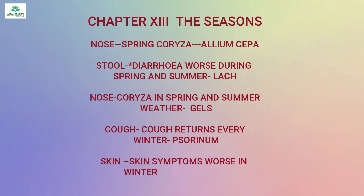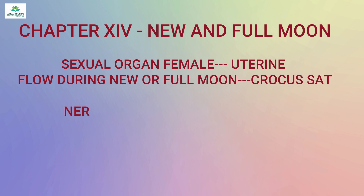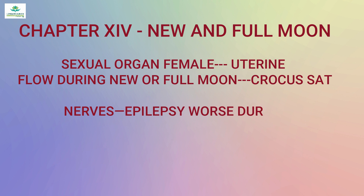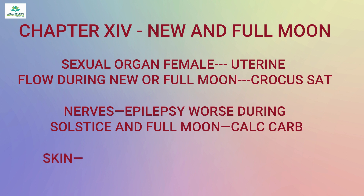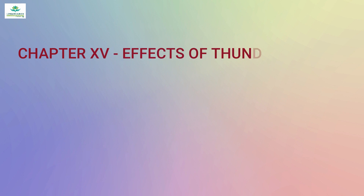Skin symptoms worse in winter season — Alumina. Chapter 14 is 'New and Full Moon.' Rubric examples: 'Uterine flow during new or full moon' — Crocus sativus; 'Epilepsy worse during solstice and full moon' — Calcarea carb; 'Skin symptoms worse at new and full moon' — Alumina.